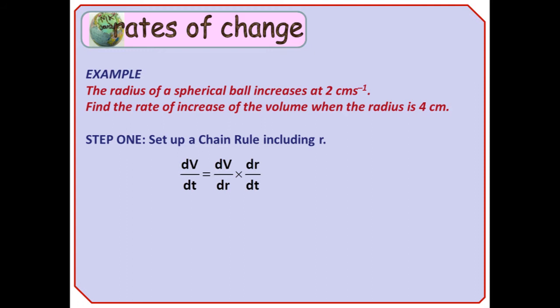So, here's an example I've made up for the purposes of explanation. The radius of a spherical ball increases at 2 cm per second. Find the rate of increase of the volume when the radius is 4 cm. I've split the method up into three short steps.